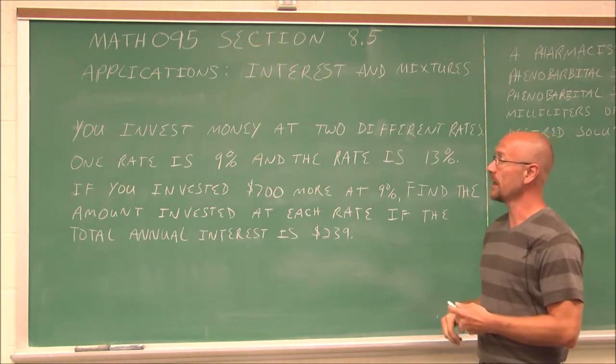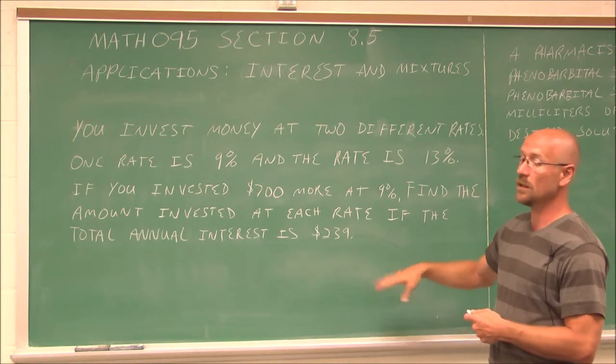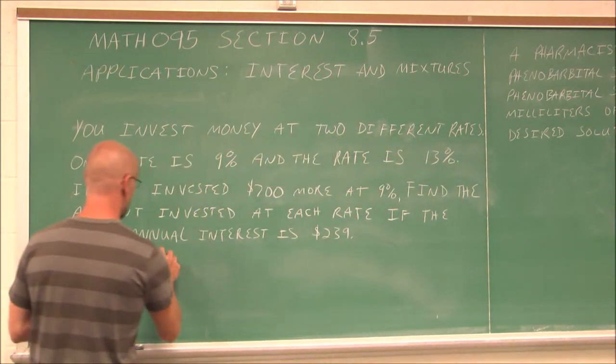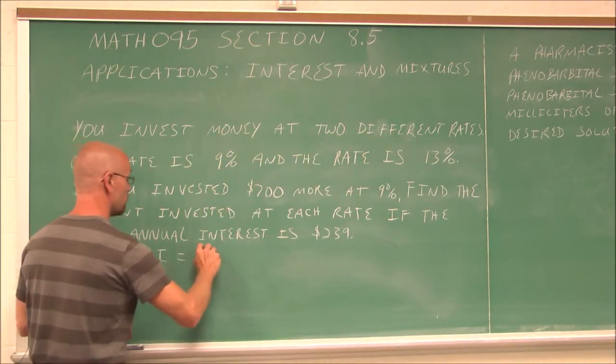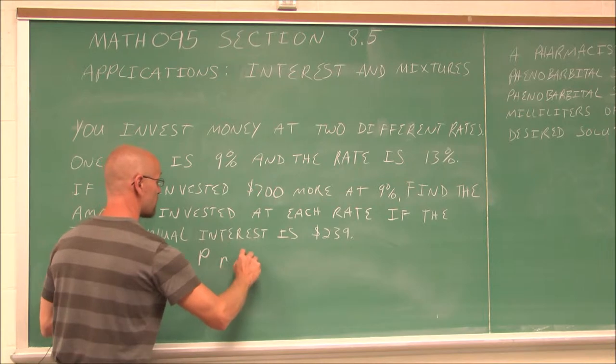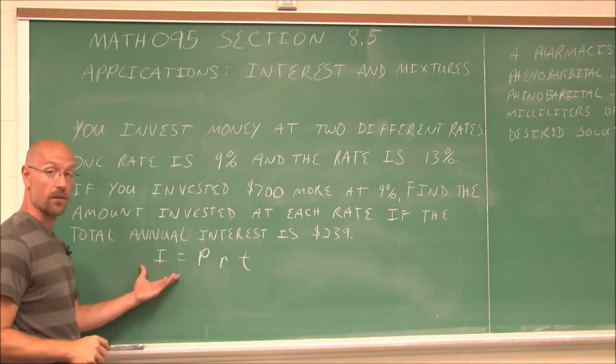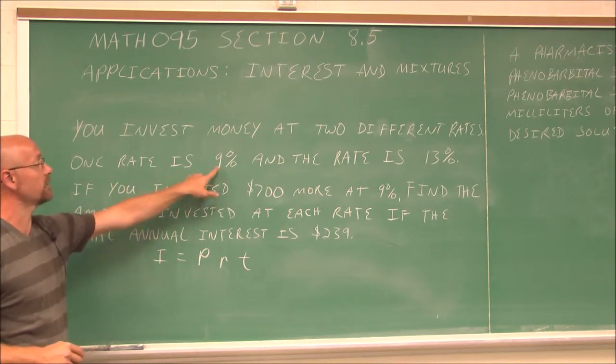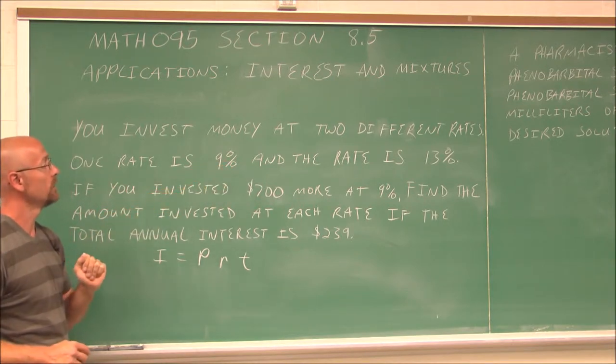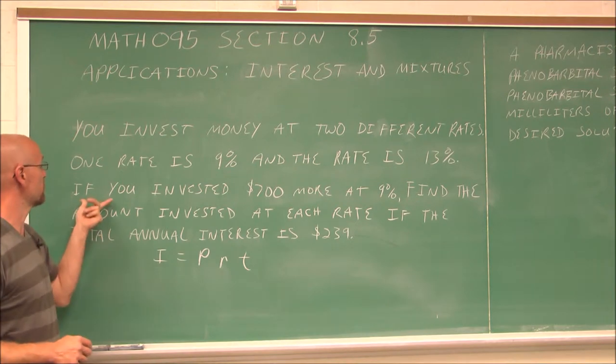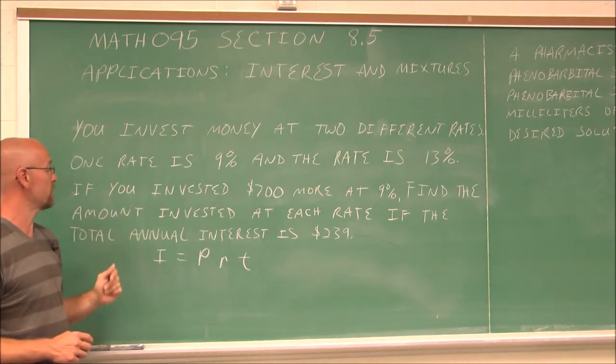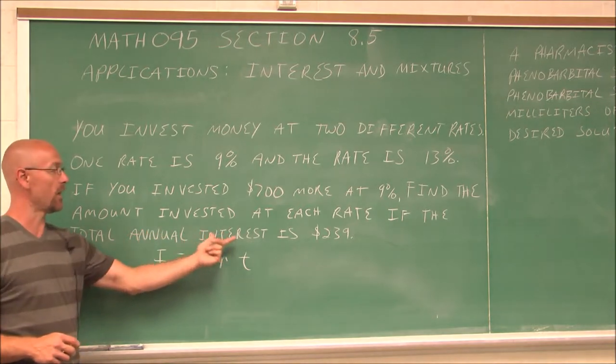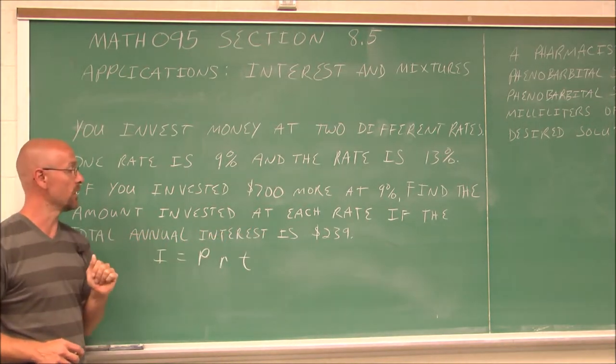The first one we're going to look at is an interest equation. Hopefully, we know the simple interest formula, which is interest equals principal times rate times time. This says you invest money at two different rates. One rate is 9%, and the second rate is 13%. If you invested $700 more at 9%, find the amount invested at each rate if the total annual interest is $239.